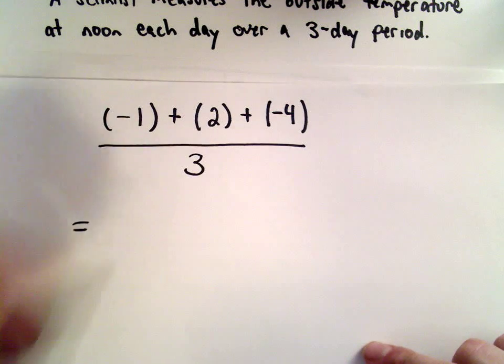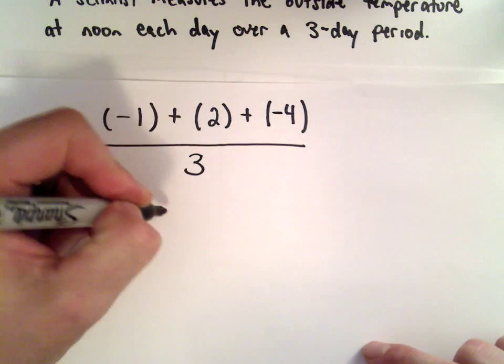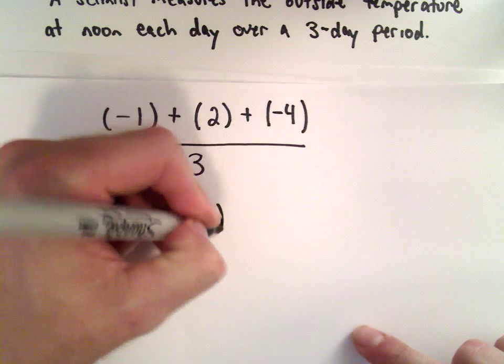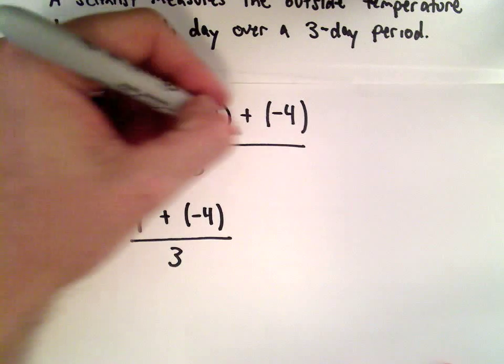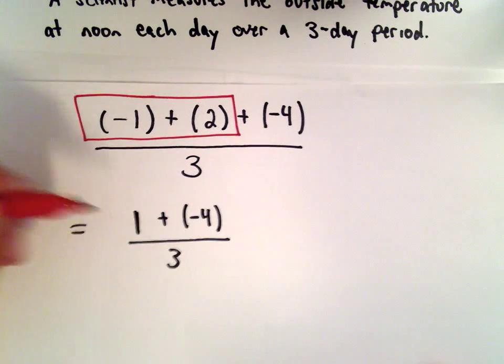So negative one plus two, that's going to be positive one, plus negative four, divided by three. So again, all I did there was I just combined negative one and positive two to get positive one.